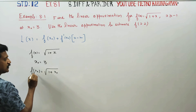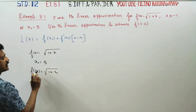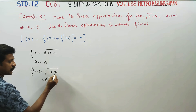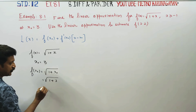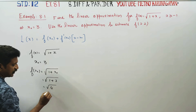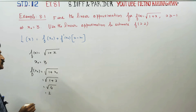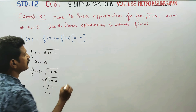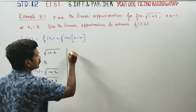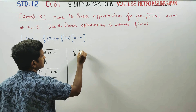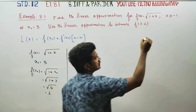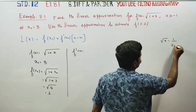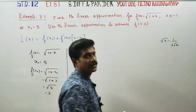f(x₀) = root of 1 plus x₀ = root of 1 plus 3 = root of 4 = 2.